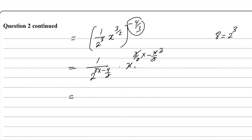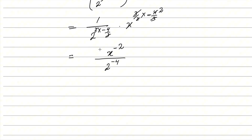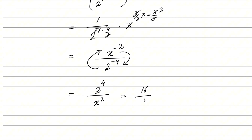So in the numerator we have x to the power negative 2, and in the denominator 2 to the power minus 4. To make the powers positive, we flip them: 2^(−4) moves to the numerator as 2^4, and x^(−2) moves to the denominator as x^2. Therefore 2 to the power 4 is 16, and the final answer is 16 over x squared.